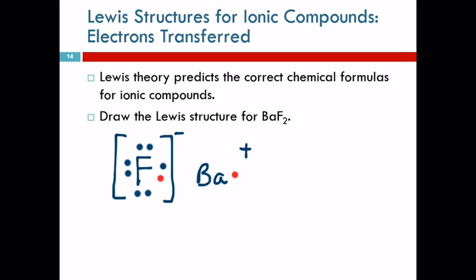Is the fluorine happy? It has eight dots, so yes. Is the barium happy? No — he's going to keep trying to get rid of that other electron. Where there's one fluorine atom, there's probably more fluorine atoms. Here's another fluorine atom — it also has seven valence electrons. So the barium still has this extra electron: hey, would you take this electron for me? Sure, I'd be happy to. So barium gets rid of that electron and gives it to the second fluorine.